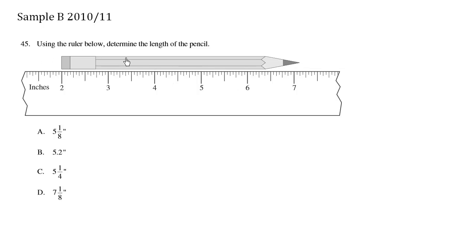Using the ruler below, determine the length of the pencil. The length is going to be position 2 minus P1. So let's find position 2. I see the tip here is kissing this measurement right over here.